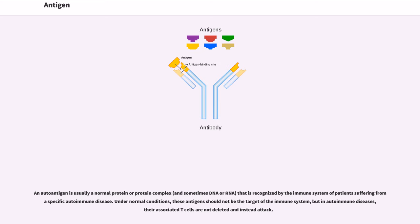An autoantigen is usually a normal protein or protein complex, and sometimes DNA or RNA, that is recognized by the immune system of patients suffering from a specific autoimmune disease. Under normal conditions, these antigens should not be the target of the immune system, but in autoimmune diseases, their associated T cells are not deleted and instead attack.